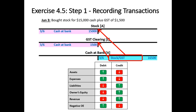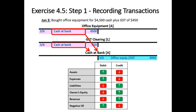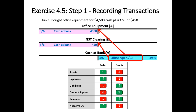Bought office equipment for $4,500 cash plus GST of $450. We've got an asset going up, which is a debit. We've got a liability going down because we paid GST, and lastly an asset in the form of cash is going to decrease because we paid money for an asset and some GST. The debit references will reference cash at bank, and our credit reference will reference office equipment slash GST.